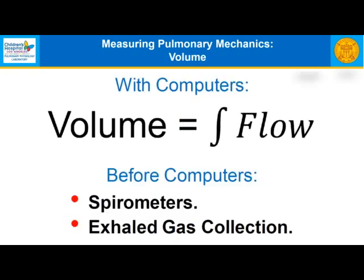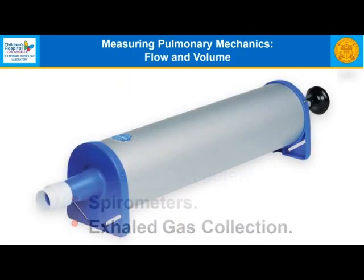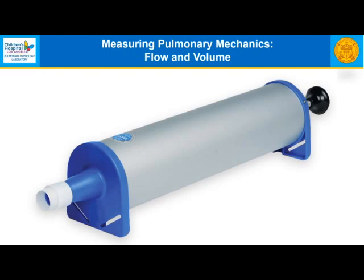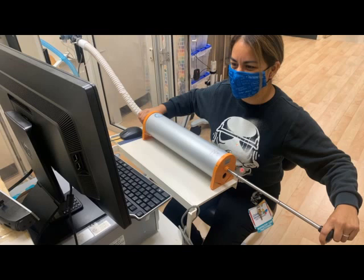With computers, volume is the integral of flow. Before computers we used spirometers and exhaled gas collection, but now we can measure flow directly using the pneumotach. This is calibrated with a three-liter syringe — if we put all the air through the pneumotach and integrate that flow, it should equal the volume. Here's an example of a pulmonary function tech calibrating the pneumotach by introducing a finely calibrated three liters of air; the integrated flow should equal three liters.